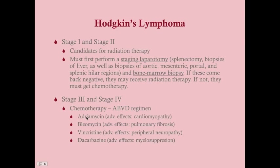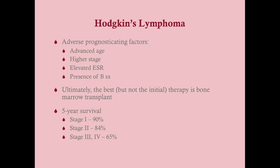Adverse prognostic factors in Hodgkin's lymphoma include advanced age, higher stage, elevated ESR, and the presence of B symptoms. The most effective therapy — though not the initial therapy — is a bone marrow transplant. The first-line therapy is chemotherapy, usually ABVD. Five-year survival is quite good: stage 1 is 90%, stage 2 is 84%, and stages 3 and 4 are 65%.